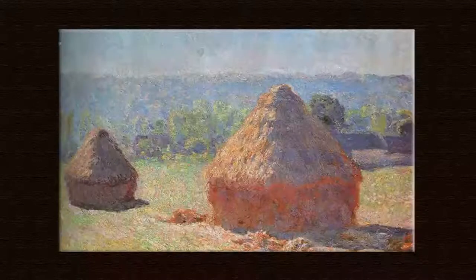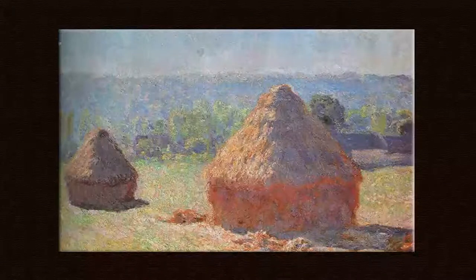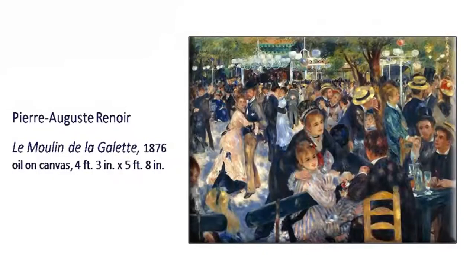Their premise was that light is something that is not constant — light is something that is constantly changing, not only in terms of direction but also in terms of the quality of light. According to Impressionist artists, not only does light change and hence the colour and tone of the object on which the light falls also change, but even the colour of the shadow is changing.